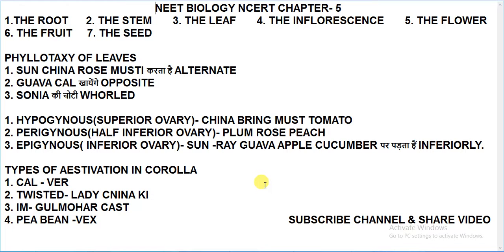Hypogynous with superior ovary examples: China rose, brinjal, mustard, and tomato. Perigynous with half-inferior ovary: plum, rose, and peach. Epigynous with inferior ovary examples: ray florets of sunflower, guava, apple, and cucumber.